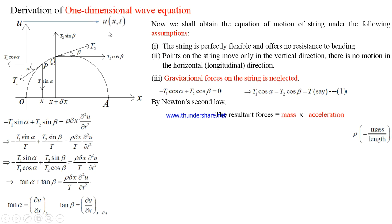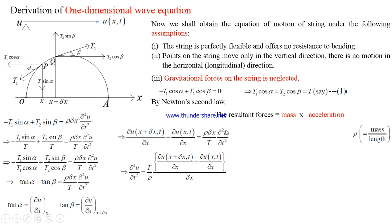Since u is a function of x and t, ∂u/∂x is also a function of x and t. Dividing throughout by ρ Δx / T, we get ∂²u/∂t² = (T/ρ) · [∂u/∂x at (x+Δx, t) − ∂u/∂x at (x, t)] / Δx. As Δx tends to 0, this expression becomes ∂²u/∂x².